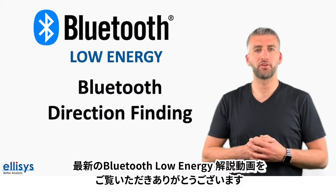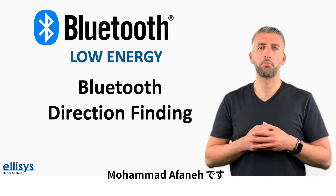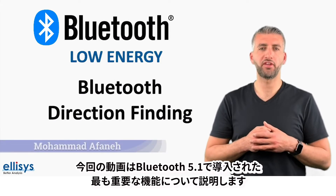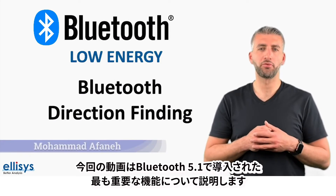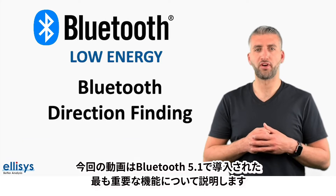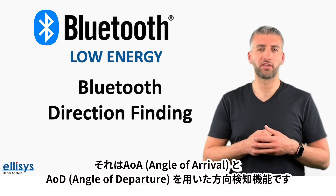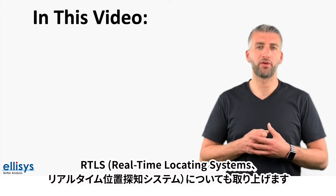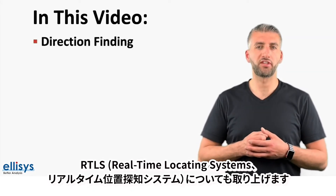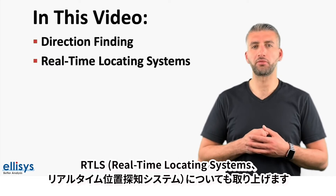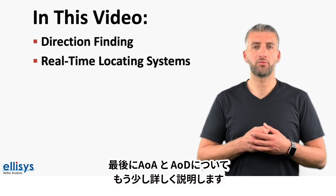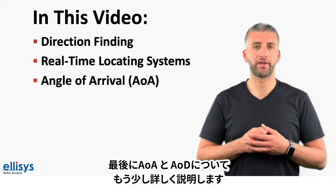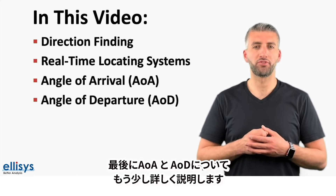Hi and welcome to this new video in the series on Bluetooth Low Energy Technology. My name is Mohamed Afani and in today's video we'll be covering the most important feature introduced in Bluetooth 5.1: Direction Finding using Angle of Arrival and Angle of Departure. Some of the topics we'll address include direction finding and real-time locating systems, or RTLS.